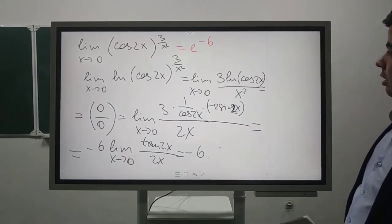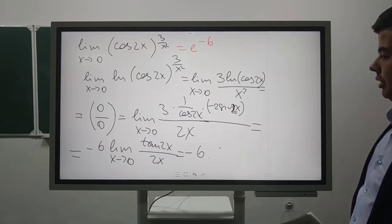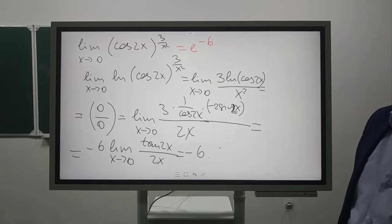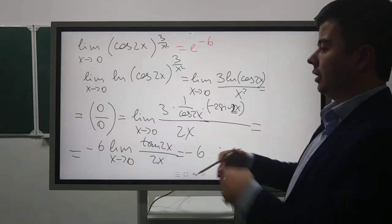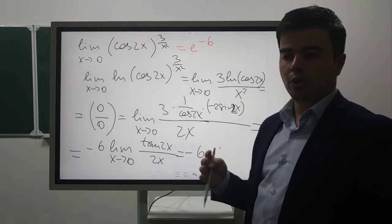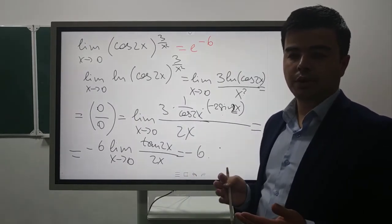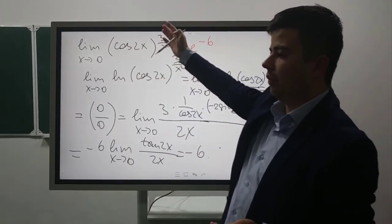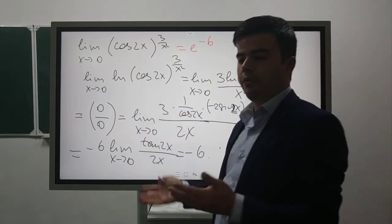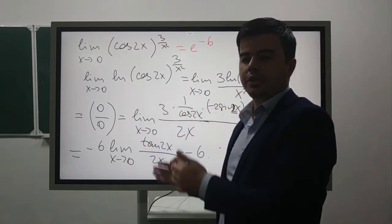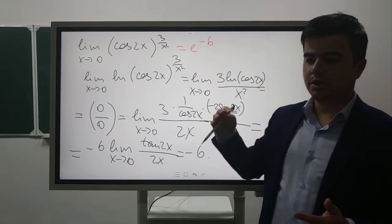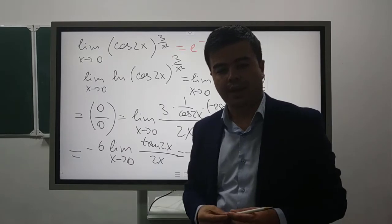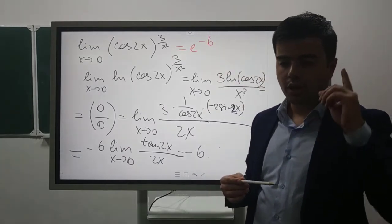We considered more examples in different forms. The given function need not be in the indeterminate form 0/0 or ∞/∞ — it can be 1^∞, 0·∞, or ∞ - ∞. We can provide these forms to the indeterminate form 0/0 or ∞/∞, and then use L'Hôpital's rule.